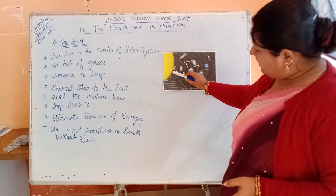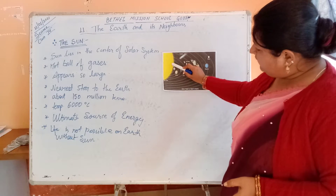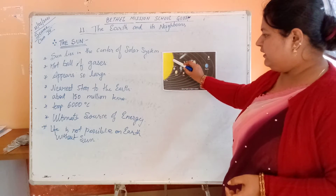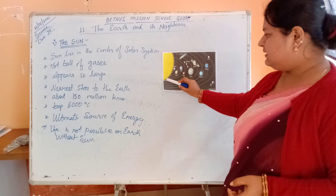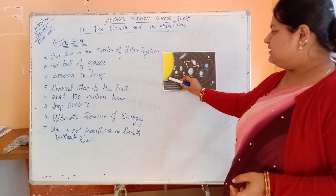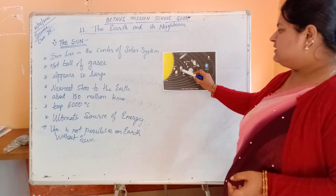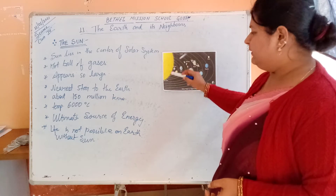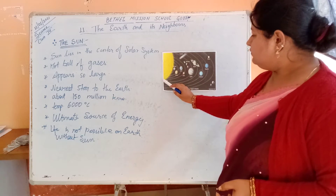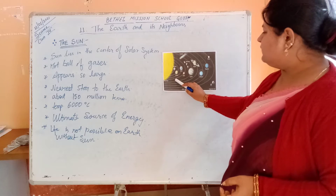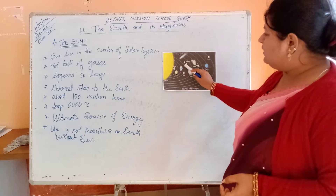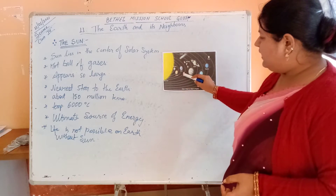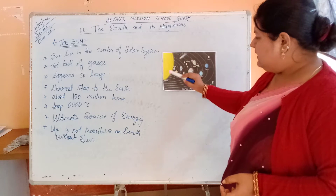Mercury revolves on its own axis. Venus revolves on its own axis. Earth is revolving around the sun on its own orbit. Then Mars will rotate on its own orbit around the sun.